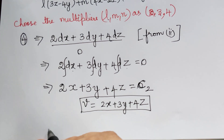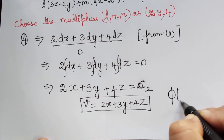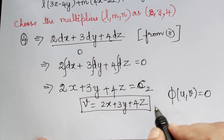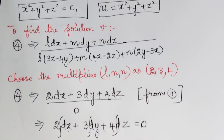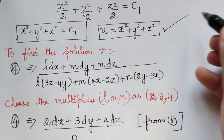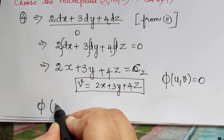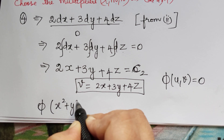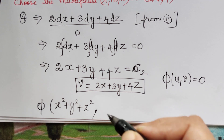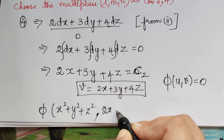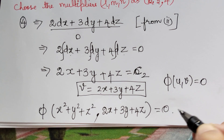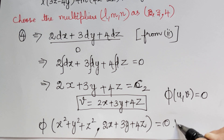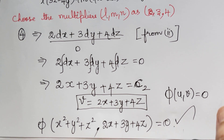Therefore the general solution is φ(U, V) = 0, which gives φ(x² + y² + z², 2x + 3y + 4z) = 0. This is the general solution of the given Lagrange's partial differential equation. Hope you have understood this problem. Thank you.